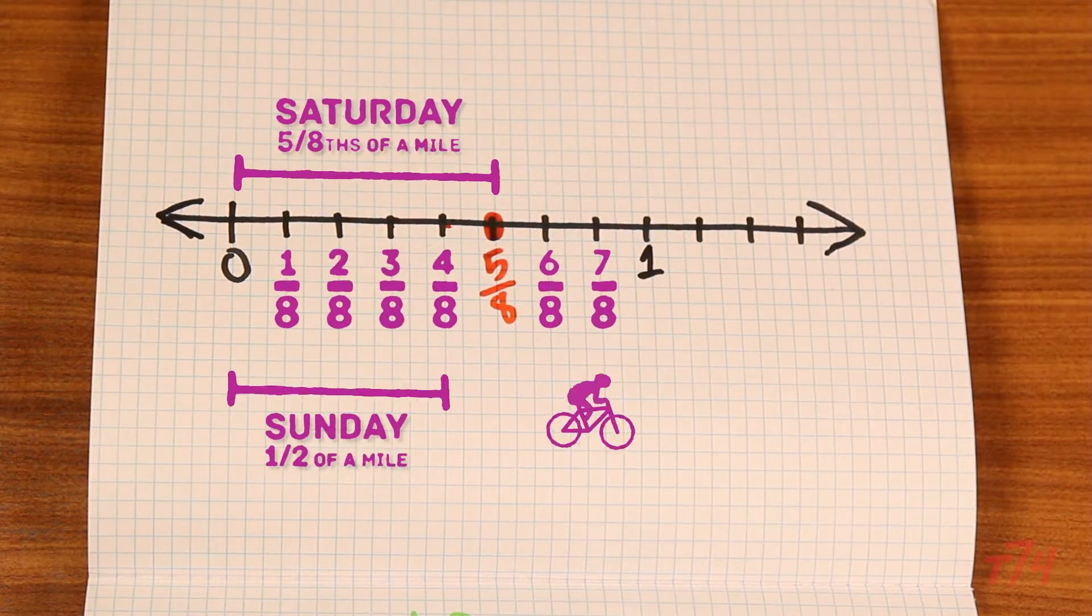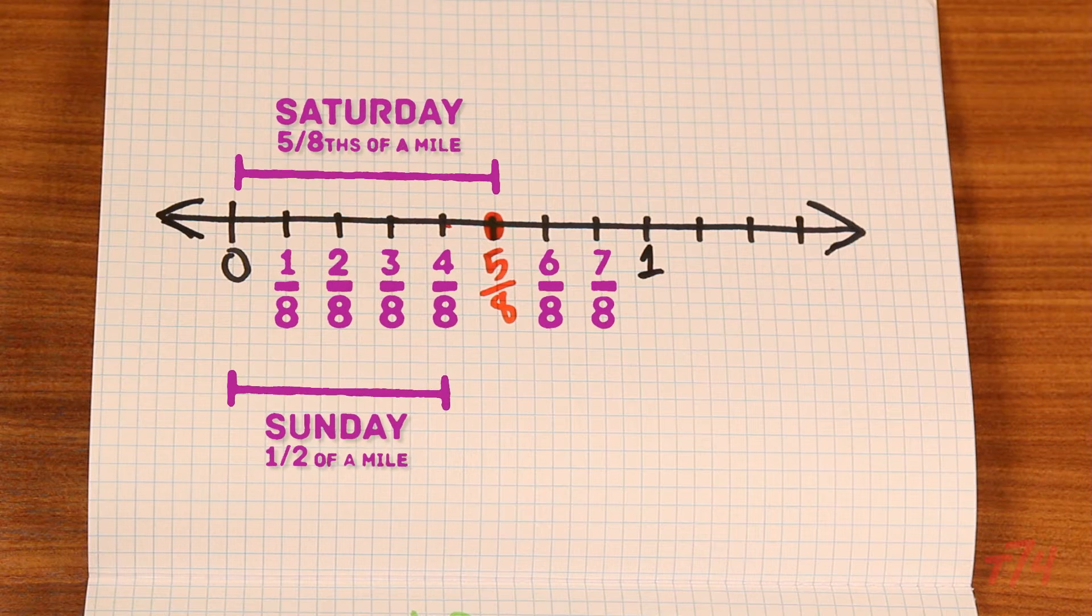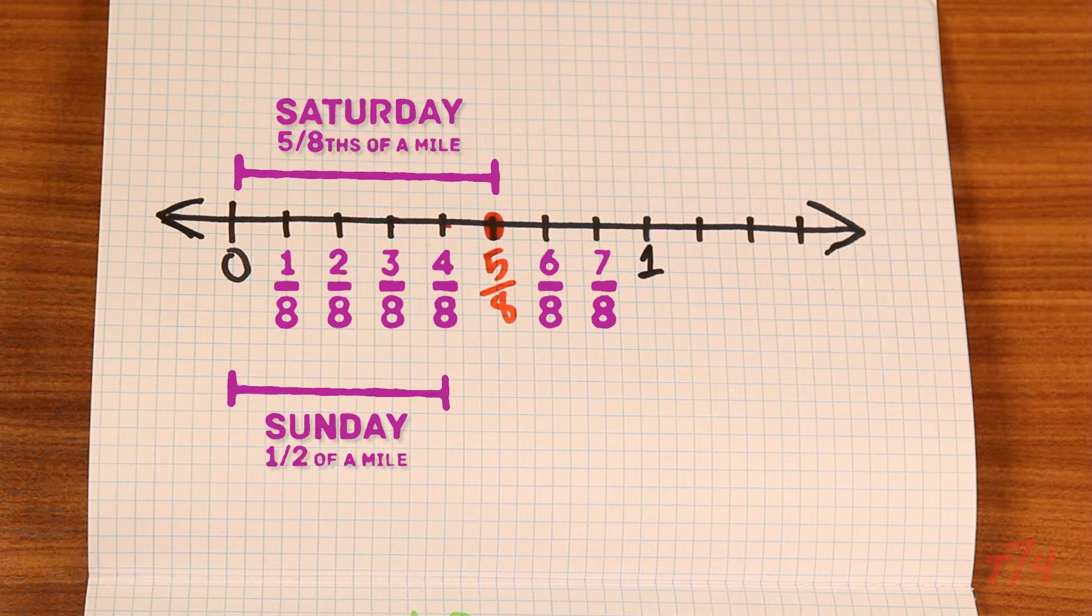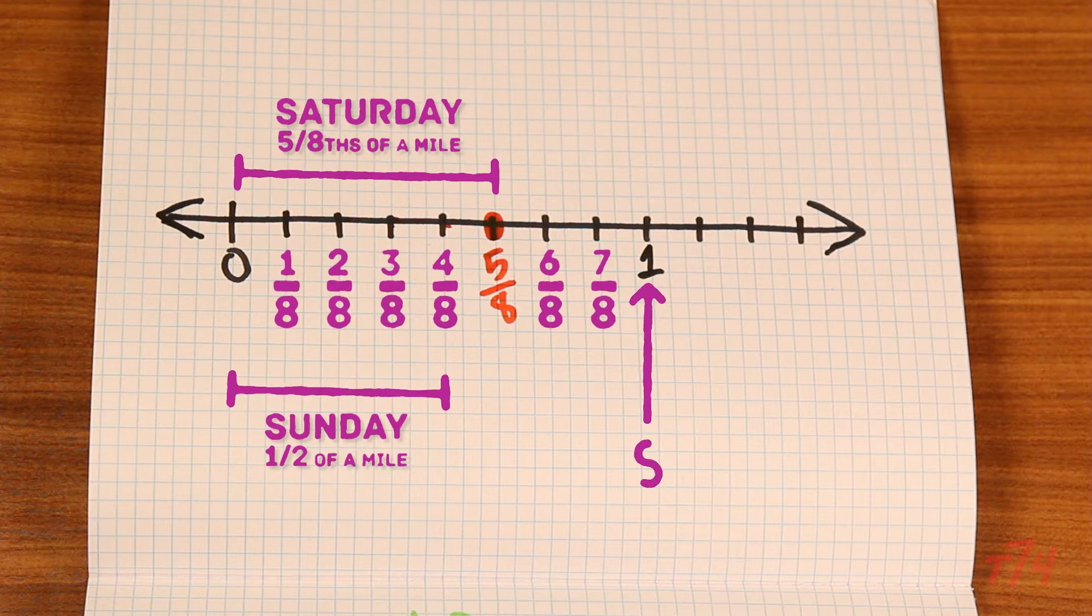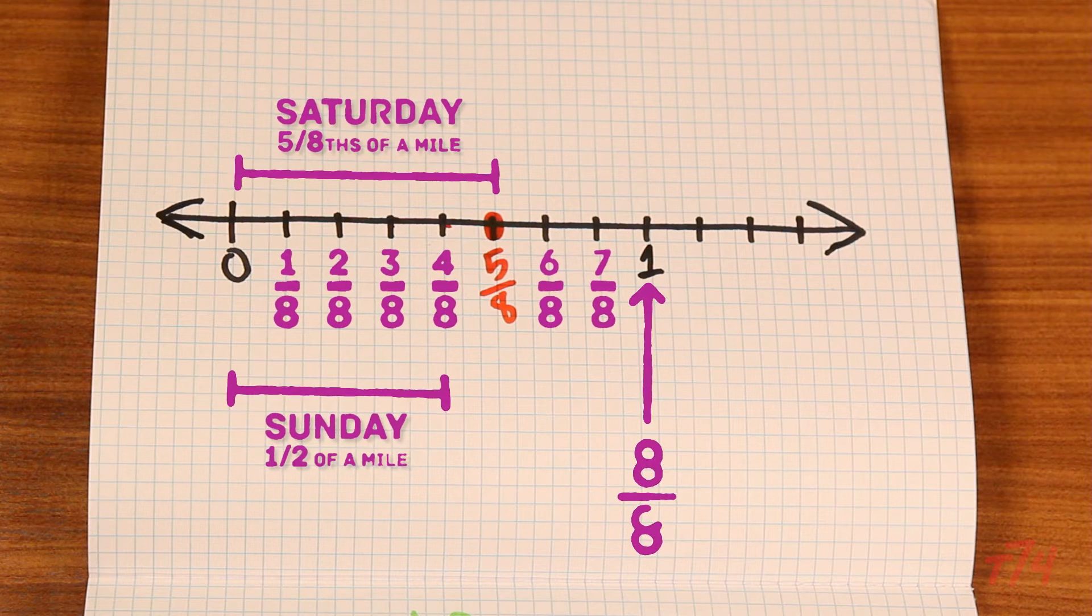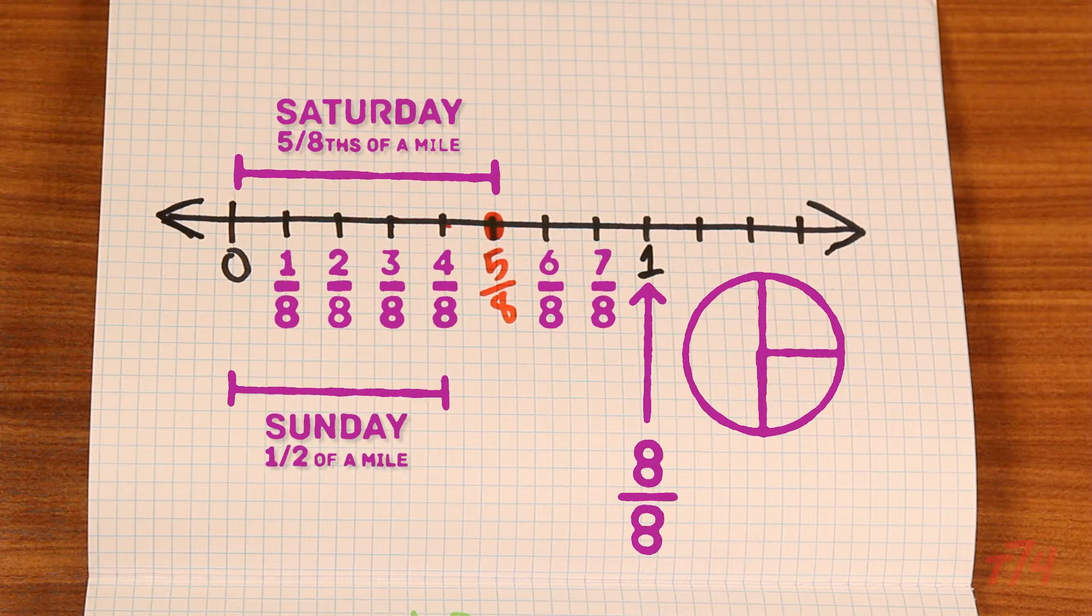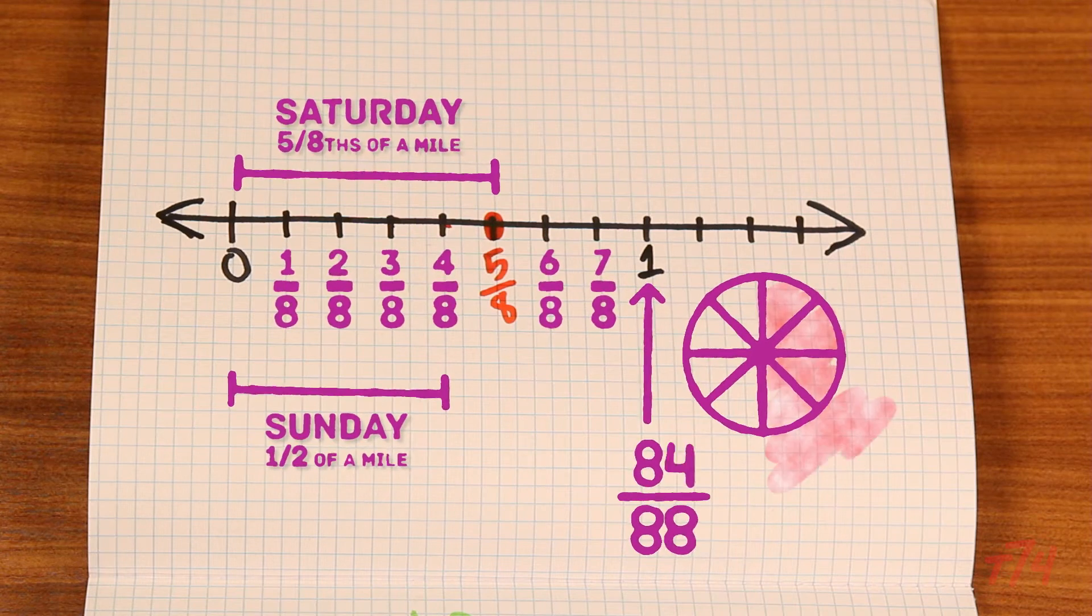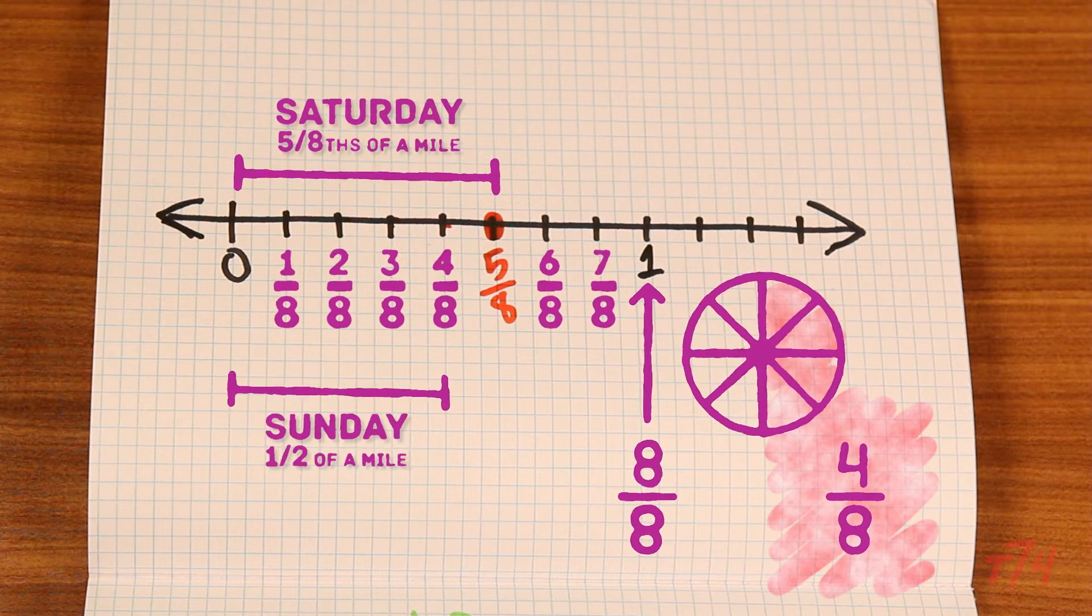And then on Sunday, he ran 1/2 of a mile. So if I keep my same denominator, if my whole is eight equal parts, then I know that one whole is 8/8 and half of 8/8 is 4/8.